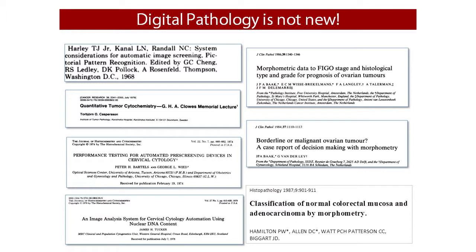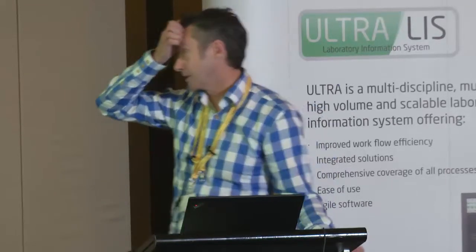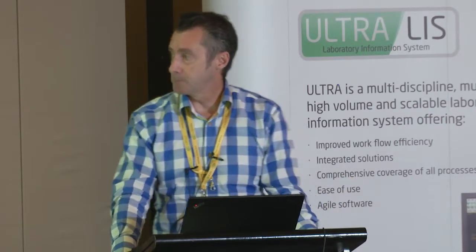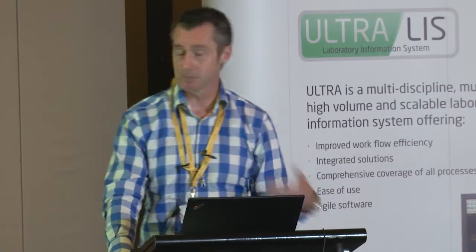But it's not new. Digital pathology has been around for some time. I've given you a snapshot of publications dating back as far as 1968, which were using digital images in cytology and pathology to help interpret what was happening within tissue samples. The first publication I was involved with was in Histopathology in 1987, using digital pathology to classify colorectal adenocarcinoma. The date of that publication tells you not only how old digital pathology is, but how long I've been involved in this space.